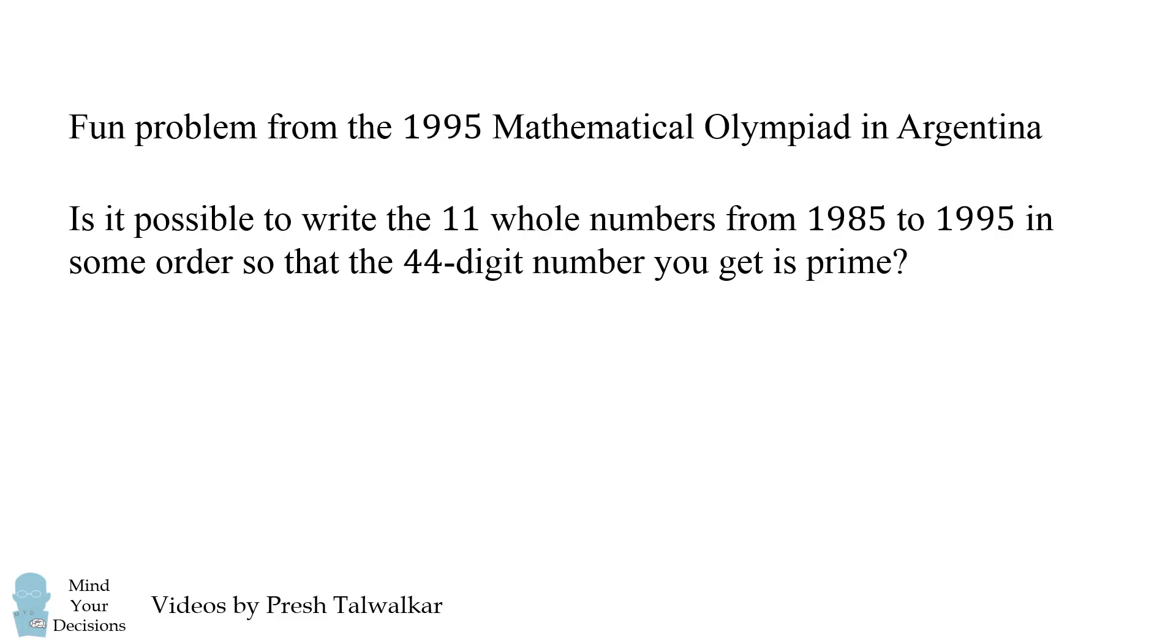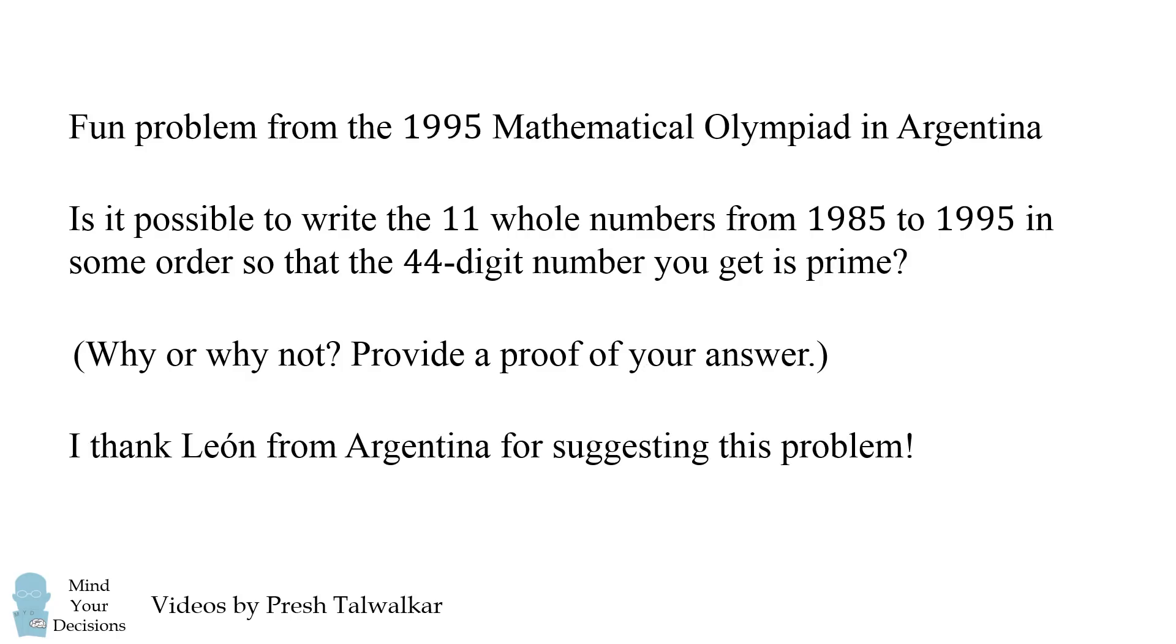Is it possible to write the 11 whole numbers from 1985 to 1995 in some order so that the 44-digit number you get is prime? Why or why not? Provide a proof of your answer. I thank Leon from Argentina for suggesting this problem.